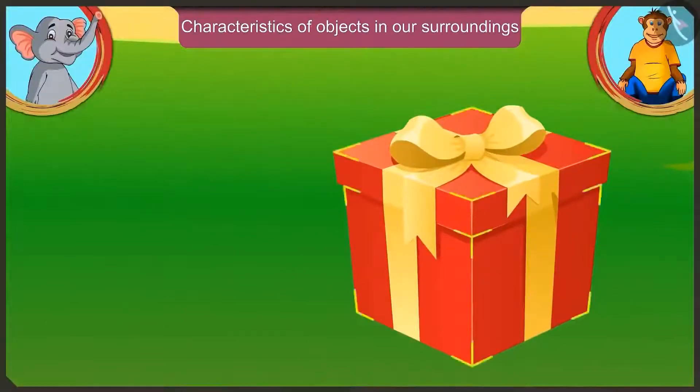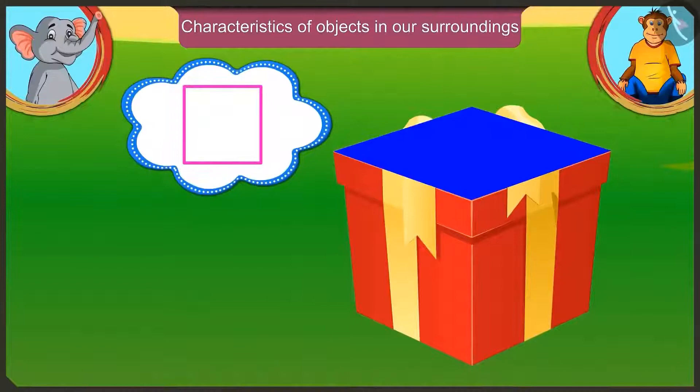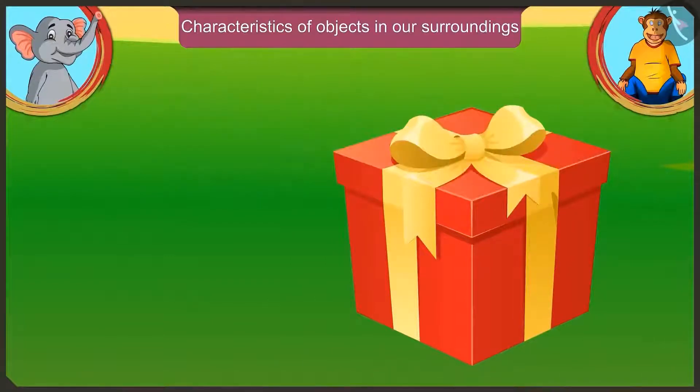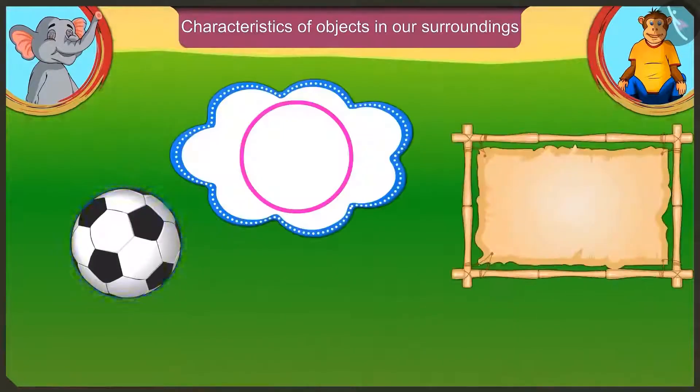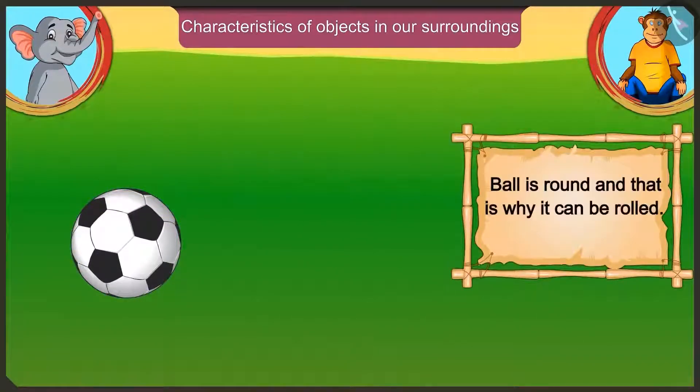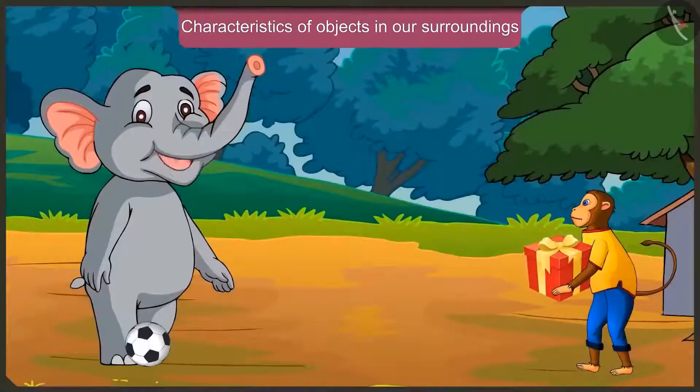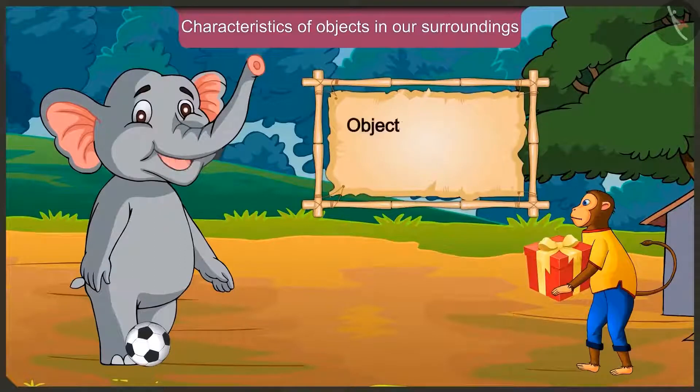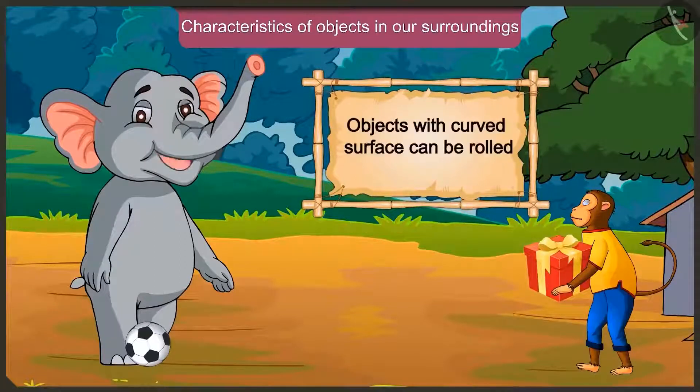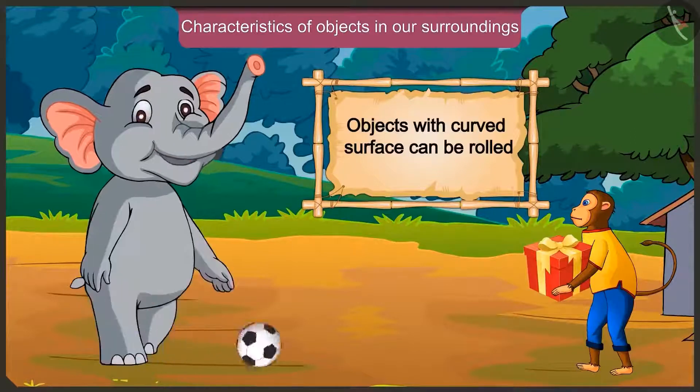Yes, Appu. This box has corners and its surface is also flat. This is why it cannot be rolled. Your ball is round, and that is why it can be rolled. Okay, I have understood that objects which have curved surface, which don't have corners, can be rolled.